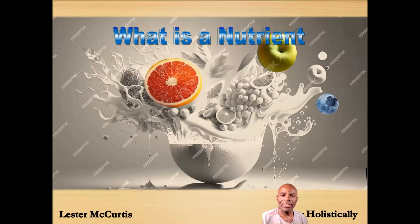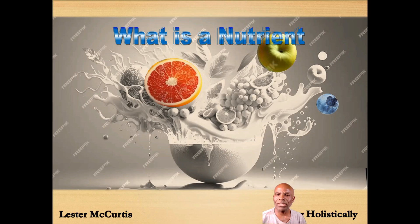What is a nutrient? A nutrient is a substance that is necessary for the function of a living organism. It's basically just a material that nourishes the body. That's what a nutrient is.